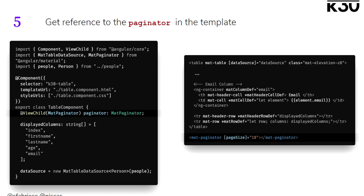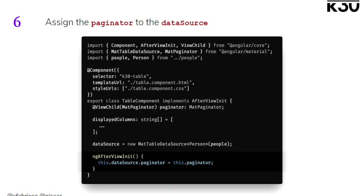So we've got the paginator component in the template. Now we need to link the component with the TypeScript file. Basically, what we're going to do first is use ViewChild — everybody here has used ViewChild — to get a reference to the component. We'll get the paginator variable into the TypeScript. It's important here to use the hook ngAfterViewInit, because we want the component to load first in the template before you can actually get a reference to it in the TypeScript file.